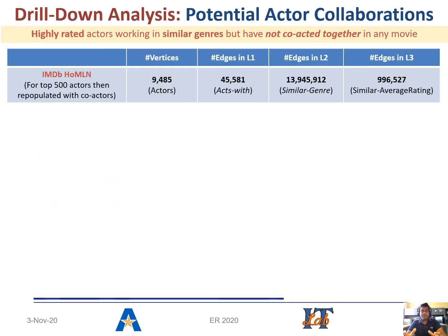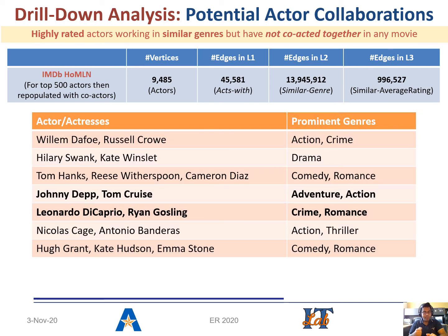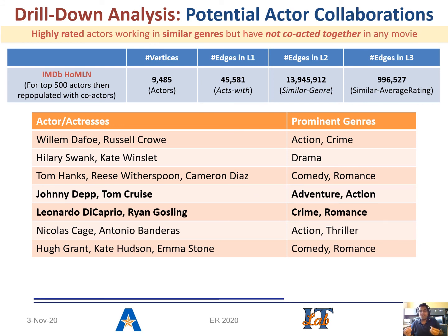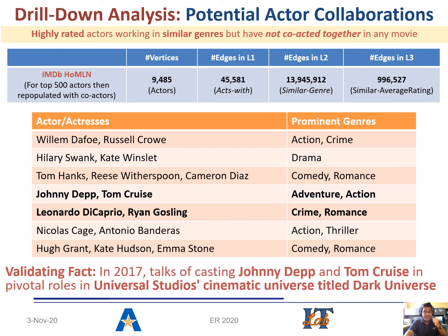Here we are showcasing a few sample results from our experiments. We drilled down into the communities obtained from the IMDB MLN expressions and found a few interesting actor combinations who have worked predominantly in some genres, where the movies are highly rated but they have never worked together. One such pair is Johnny Depp and Tom Cruise. They have worked in a lot of adventure and action-oriented movies — like the Mission Impossible series — but have never been cast together. These are pairs which can become potential actor collaborations in the future that production houses can look into. Interestingly, in 2017, Investor Studios was actually in talks with this pair, but that never saw the light of the day. The drill-down process was possible only because we were able to maintain the relations as part of the EER modeling process.